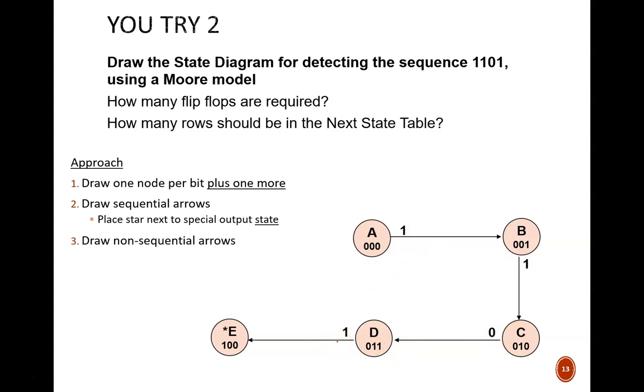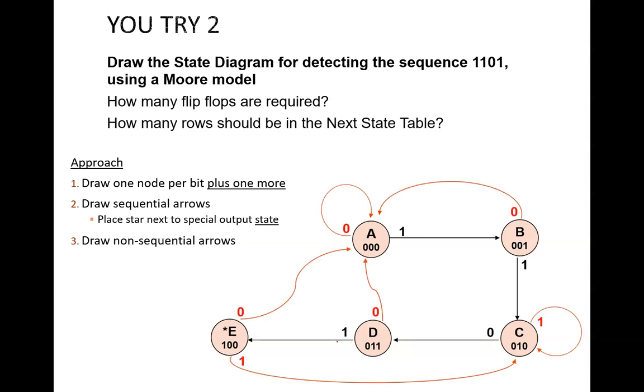Finally, we add the non-sequential arrows. The behavior at nodes A, B, and C actually is identical to what we saw in the previous problem, which makes sense because we are tracking the same sequence. It turns out that any non-sequential input of 0 moves the state back to A, and both cases of a non-sequential 1 move the state to C. We explained previously why this 1 at C loops back to C. The reasoning is the same for this 1 at E. The two most recent inputs are 1, 1, which is the definition of state C.